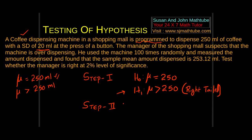Step number 2: level of significance, denoted by alpha. Alpha is 2%, which equals 0.02.